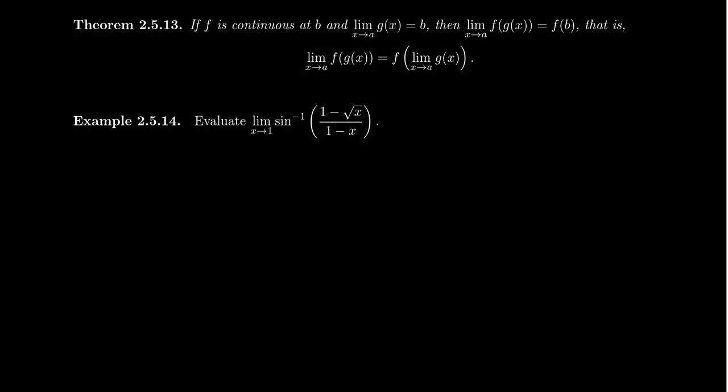In this video, we want to talk about how function composition interacts with continuous functions. The good answer is they are quite compatible with each other. Imagine a function f is continuous at some number b, and that number b happens to be the limit of the function g of x as x approaches a.